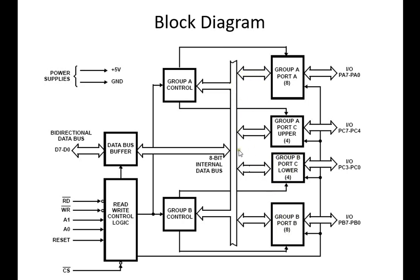The bidirectional connection between the internal buses of the groups and ports is conducted here. Group A has Port A with eight ports and the upper Port C bits, which are PC7 to PC4. Group B contains the lower Port C bits, PC3 to PC0, and Port B with eight bits. This is the block diagram of PPI, which is very important for exam questions.